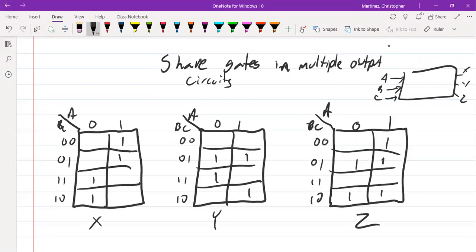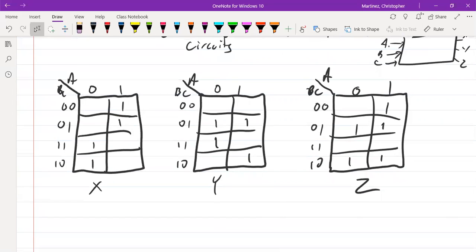The first thing we want to do is let's just do what we've been doing in the past. We're gonna take each individual K-map and figure out how we would solve it. So let's solve X. For X we see two good pairs. The first one is A bar B and then the next pair is A B bar.